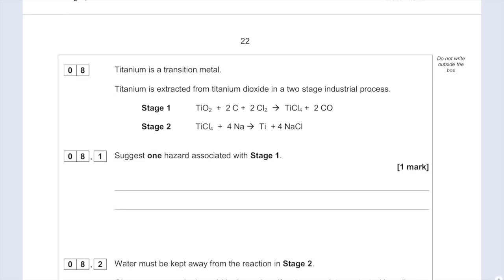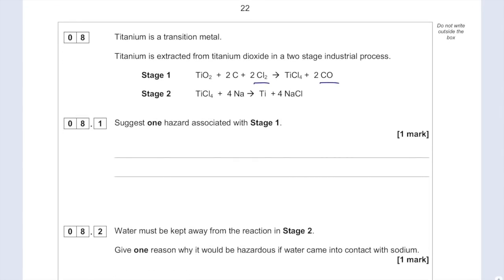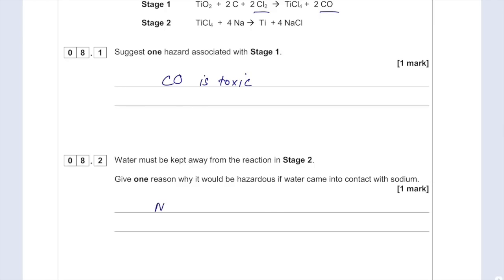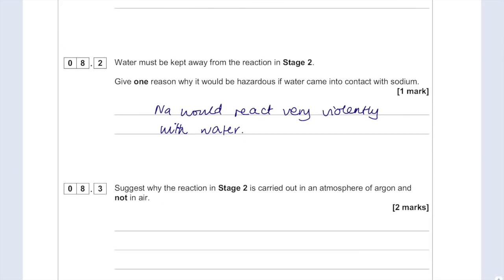Titanium is a transition metal. Titanium is extracted from titanium dioxide in a two-stage industrial process. Suggest one hazard associated with stage one. Lots of hazards - we've got chlorine gas and carbon monoxide, both pretty unpleasant. I'm going to state that carbon monoxide is toxic. Water must be kept away from the reaction in stage two. Give one reason why it would be hazardous if water came into contact with sodium. Sodium would react very violently with water. Sodium is so reactive it will react with water in your hand.